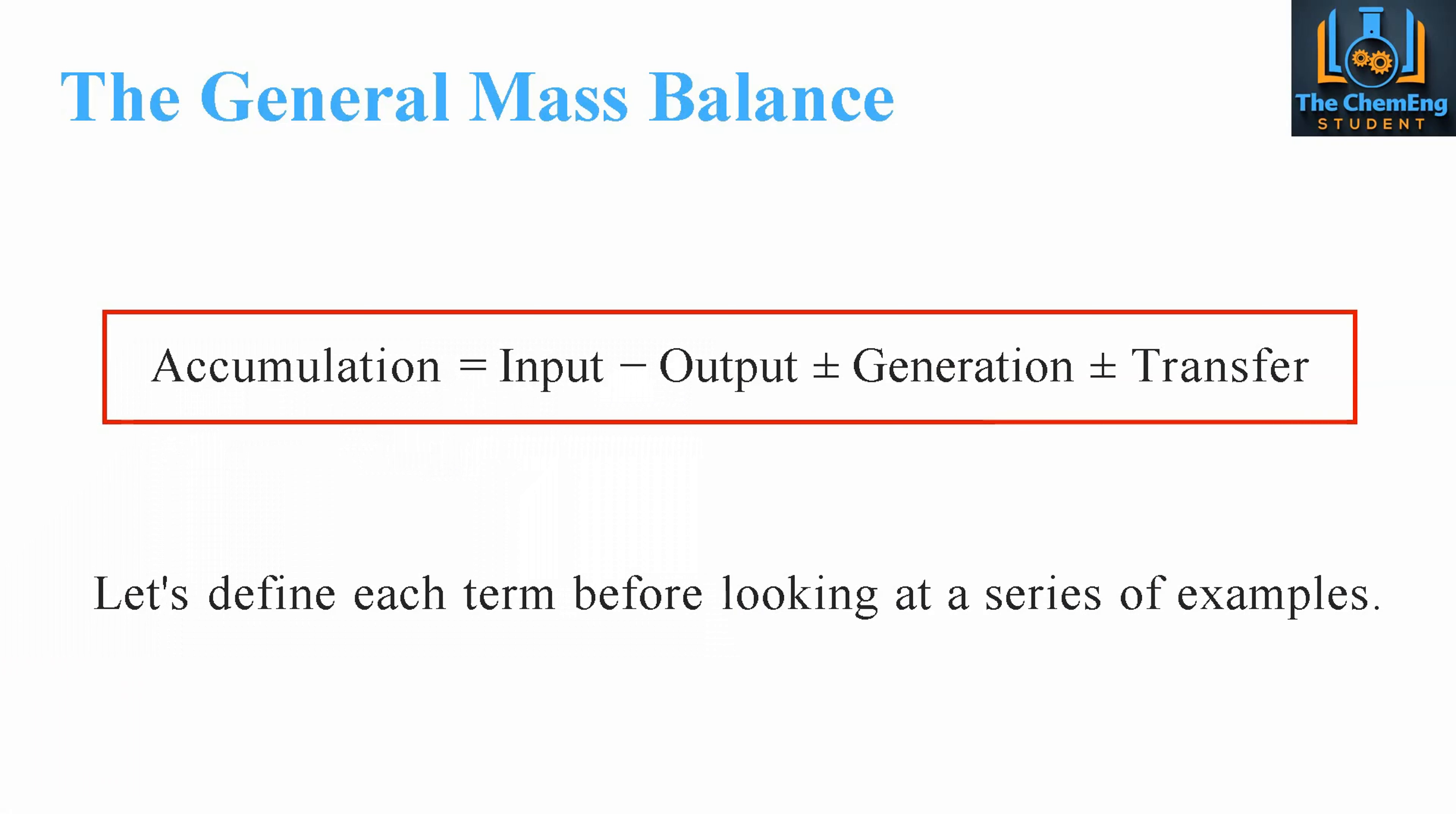So the general mass balance can be defined as the following equation. The accumulation is equal to the input minus the output of the system plus or minus the generation plus or minus transfer. Now we will look at defining each of these terms in just a second and then we'll have a look at a working example at the end of this video.